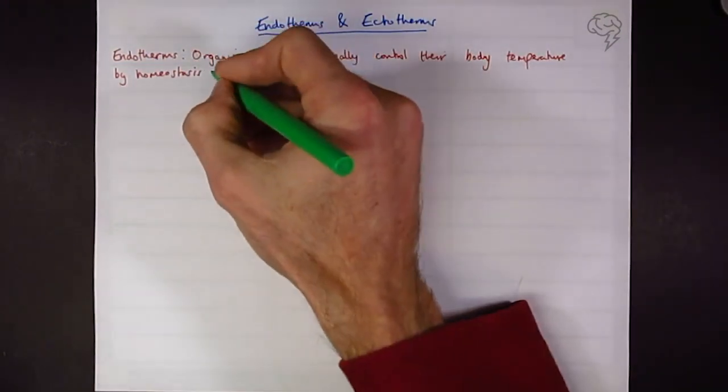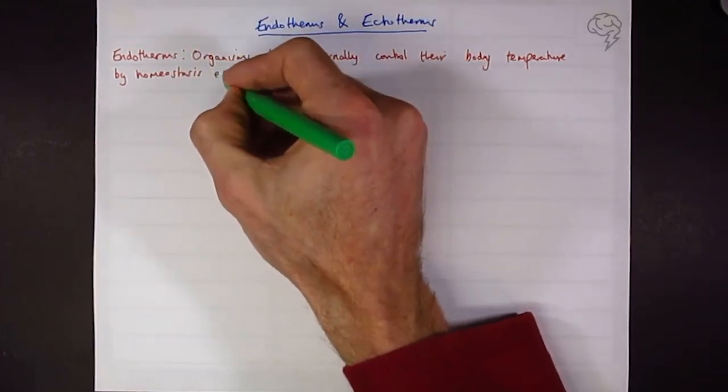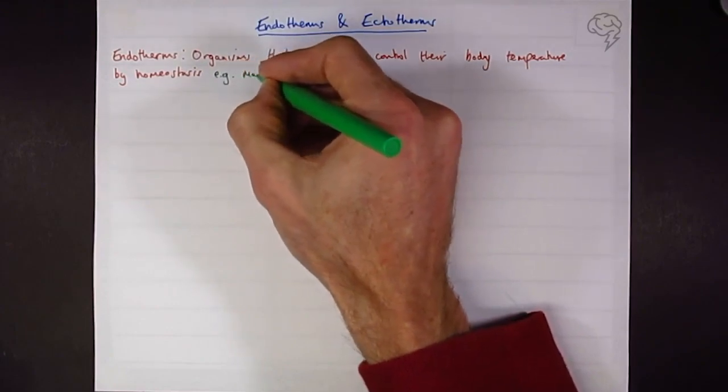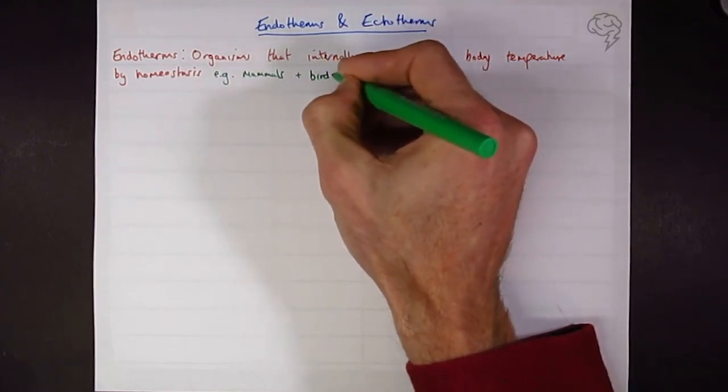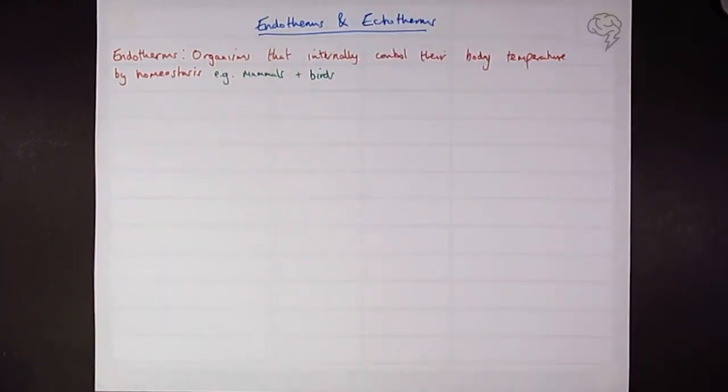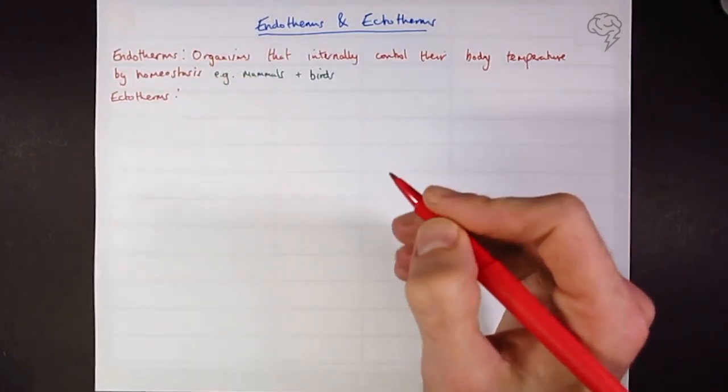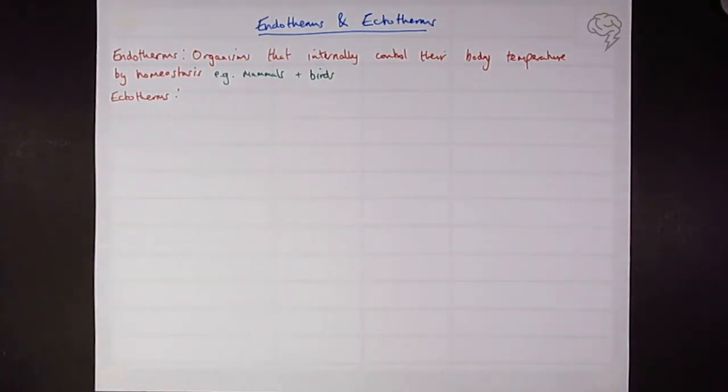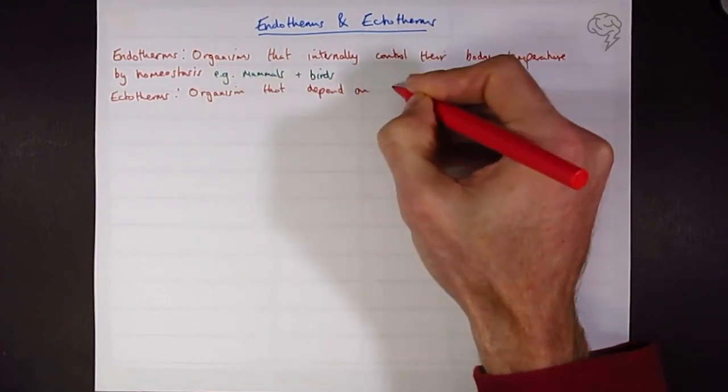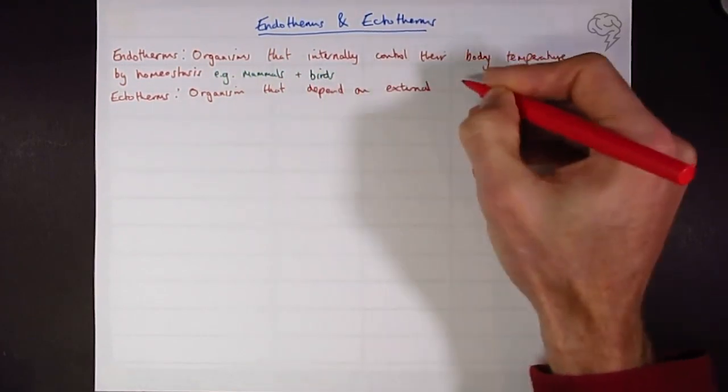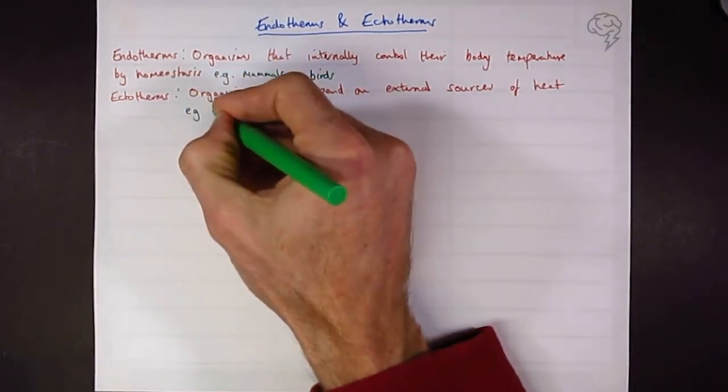The examples - mammals, obviously us, are warm-blooded, which is kind of what this basically means, but that's not a scientific term. So we can say mammals, also birds, are warm-blooded or endotherms. Next up, obviously we have ecto - ecto means outside. You might want to call them cold-blooded but not in your exam. So, organisms that depend upon external sources of heat. Classic cold-blooded - we're thinking reptiles mostly.